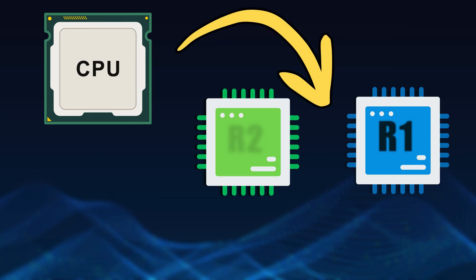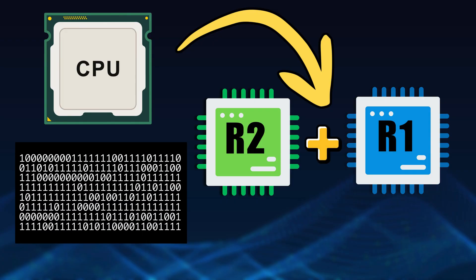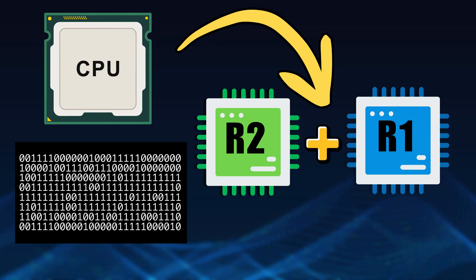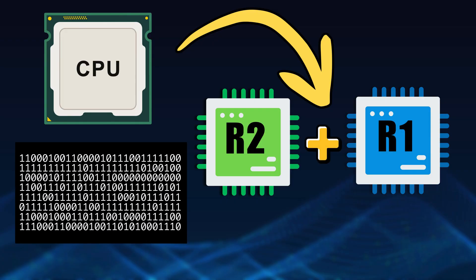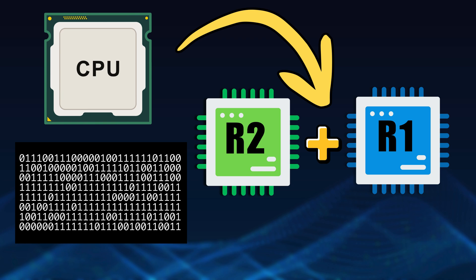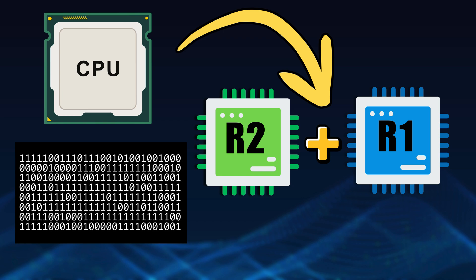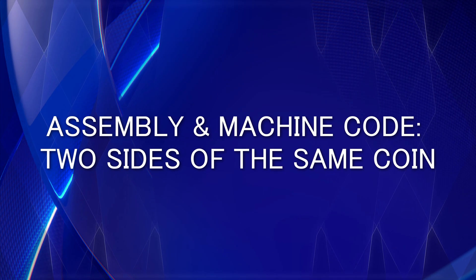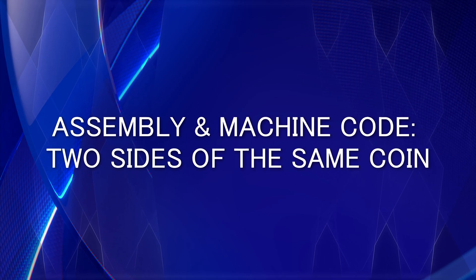So this string of binary digits, unreadable to most people, is a perfectly clear sentence to the CPU — such as "add the value from register 2 to register 1." And in assembly, that same command becomes readable: "add r1, r2." That readability is possible because of a crucial principle: the assembly text and the machine code binary are really just two sides of the same coin.